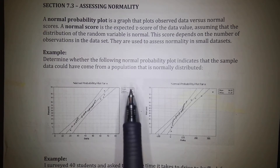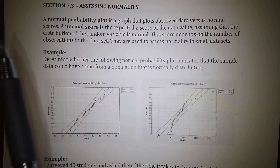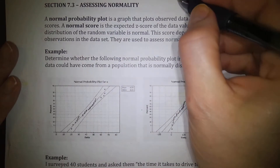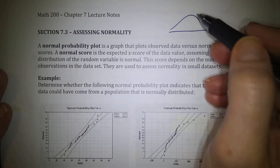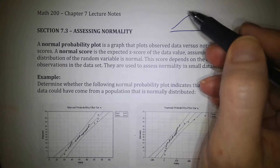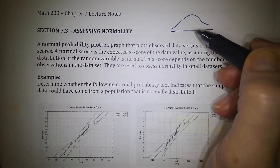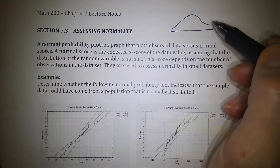In the second half of chapter 7, we're going to talk about how to assess normality. We don't always know when a problem or data is given to us whether it is normal or not. All the things we've been doing in the previous video using the normal probability distribution assume that the data is already normally distributed and bell-shaped. What if we don't know that? We can't use any of these methods until we prove that a data set is in fact bell-shaped and normal.